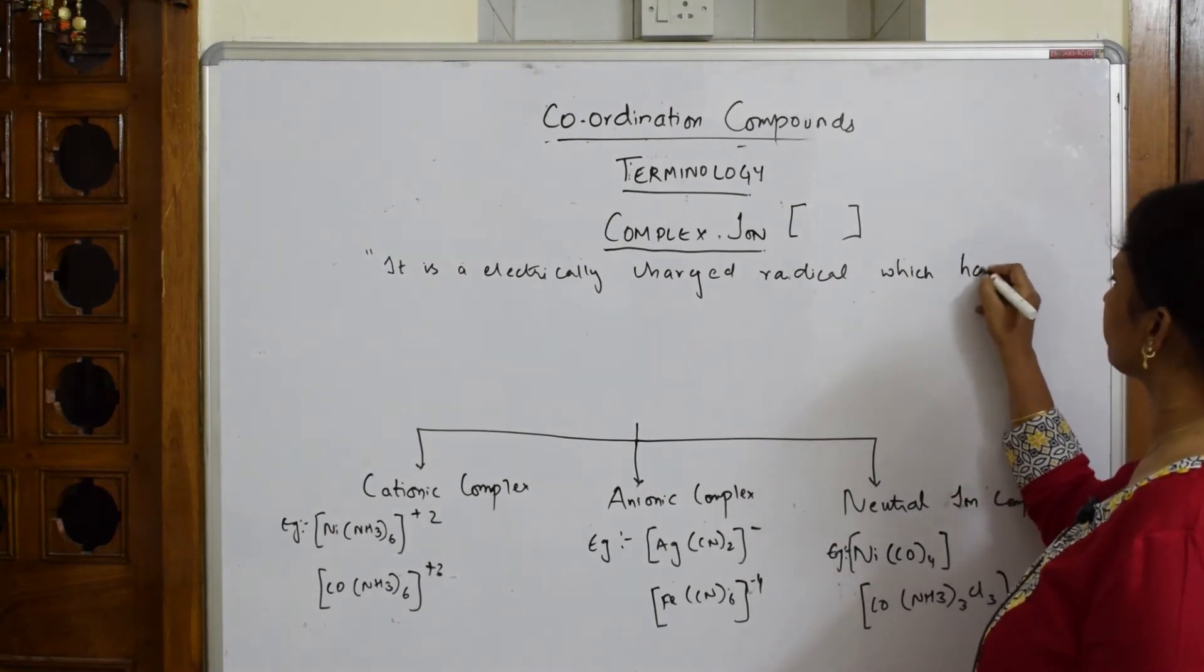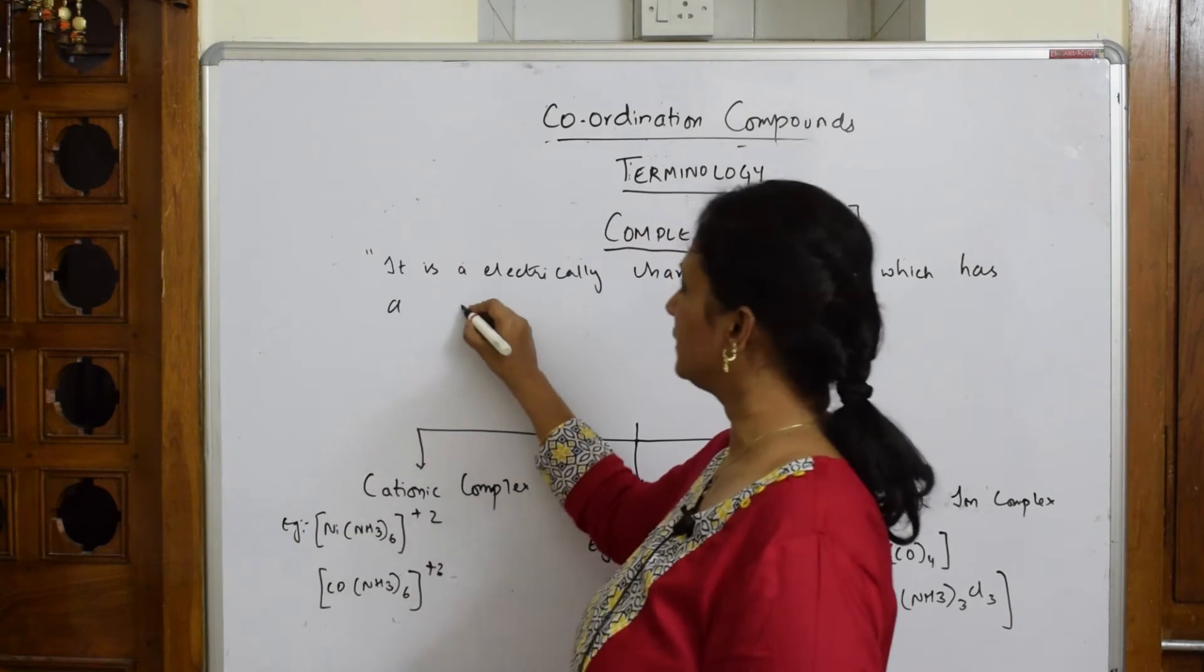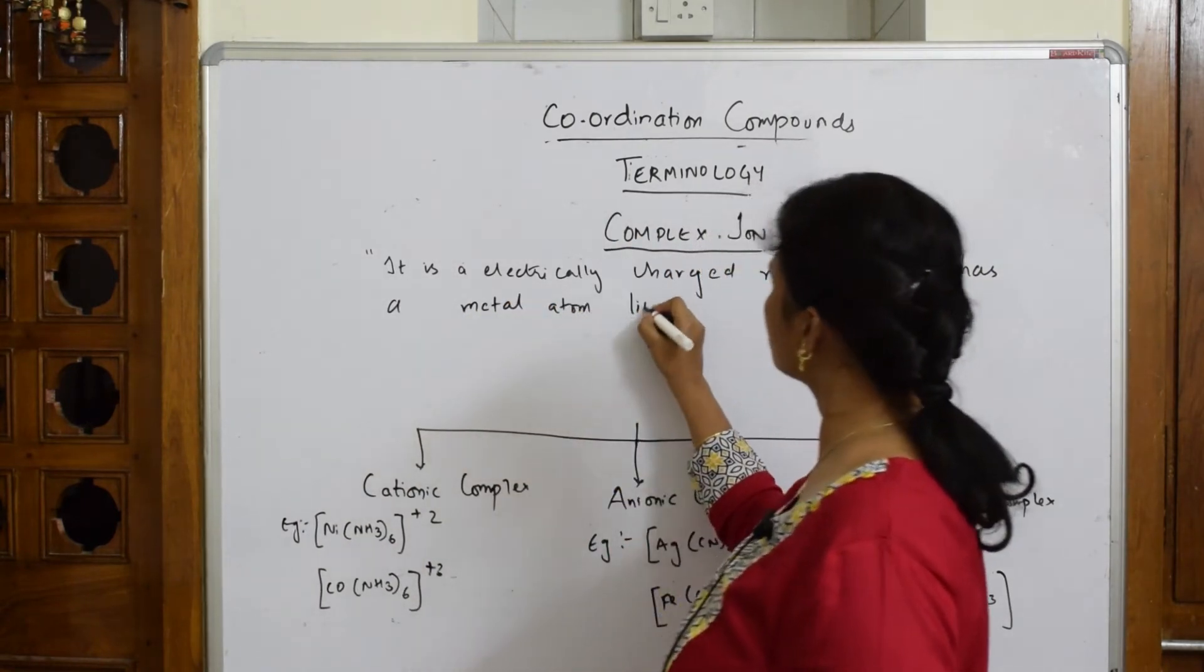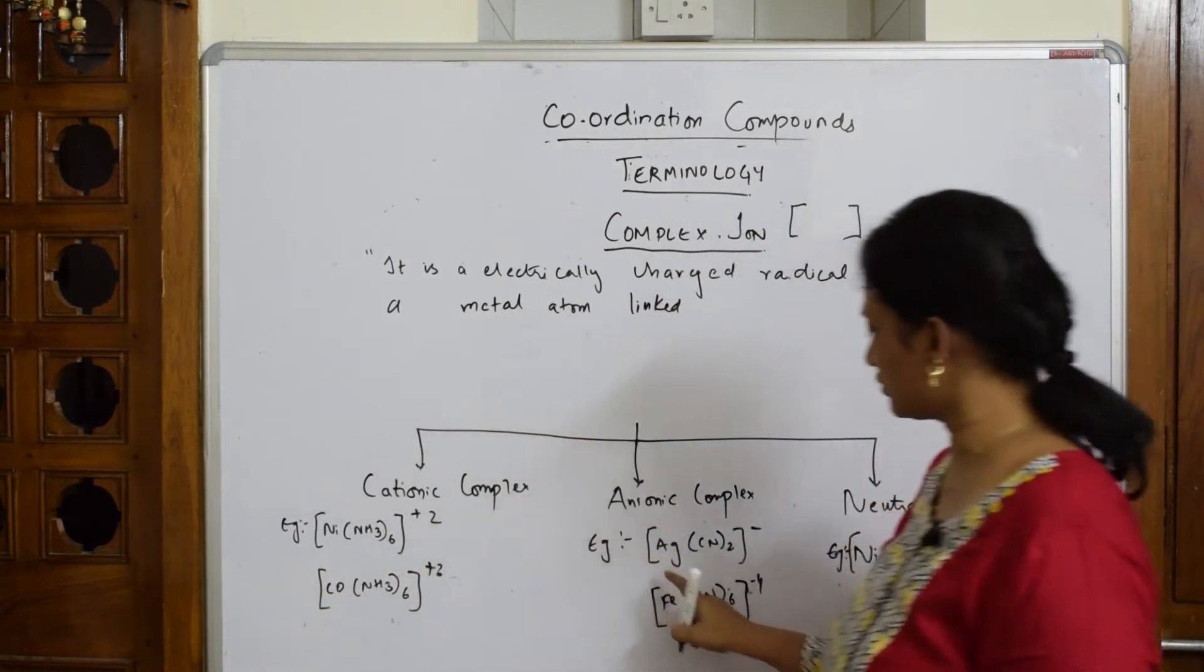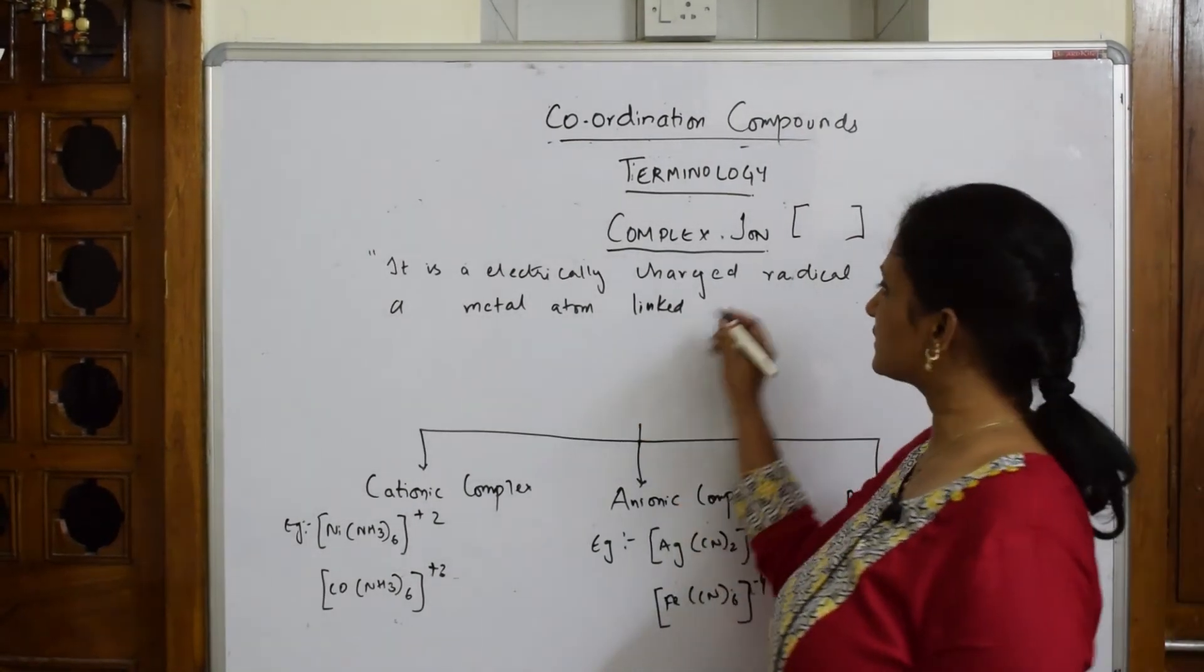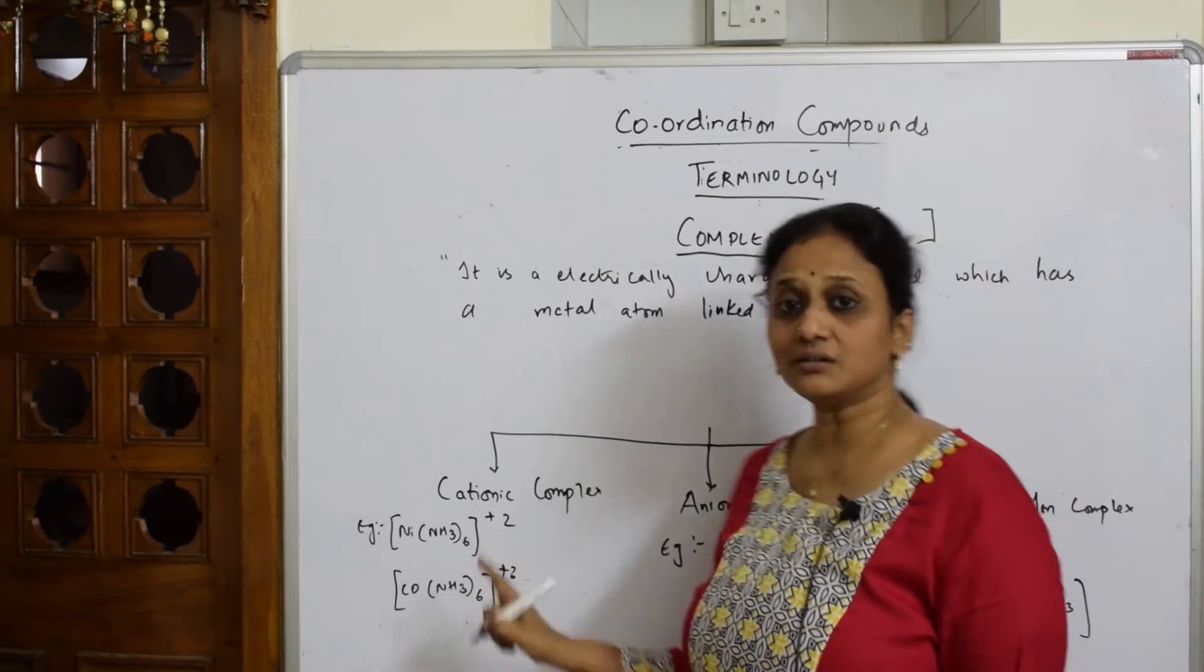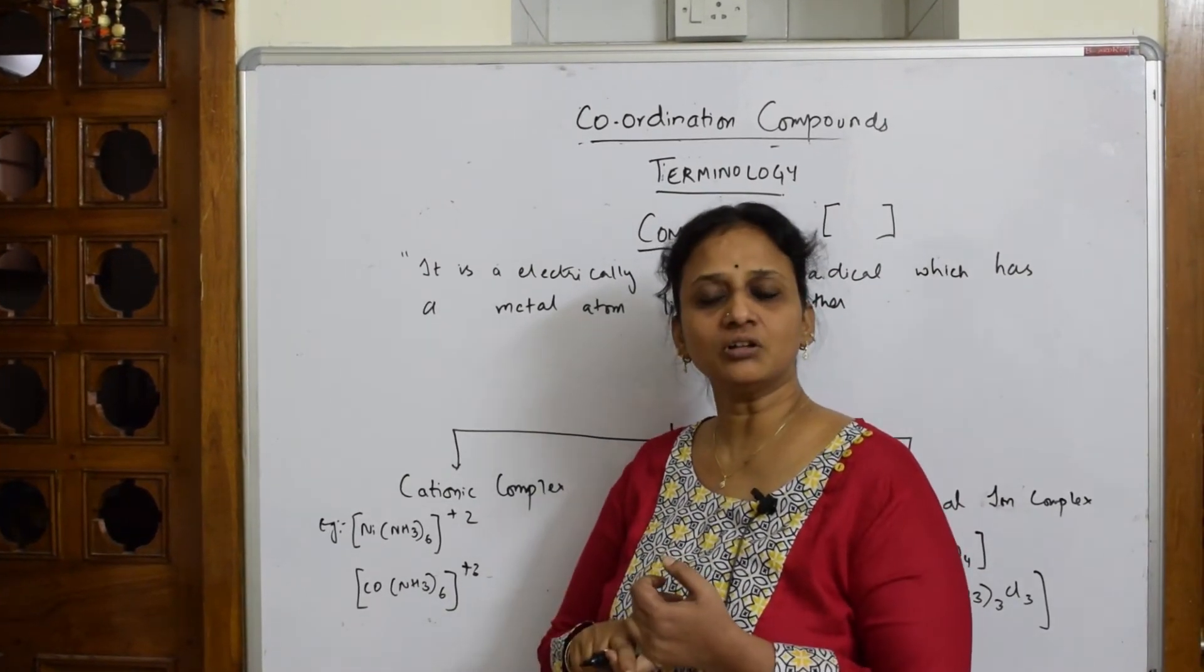The metal atoms are typically transition metals. Where are they linked? The metal is linked to ligands, which can be either an ion or a neutral molecule. Since we've written metal atom here, it's linked to a ligand.